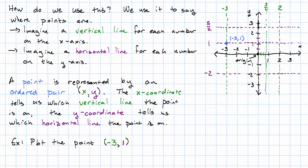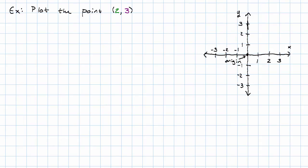Let's do another example. Suppose we want to plot the point two, three. Here's two on the x-axis, so we draw the vertical line that represents the number two. Here's three on the y-axis, so we draw the horizontal line that represents the number three. This point where they cross is the point two, three.